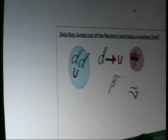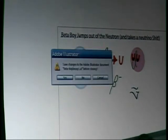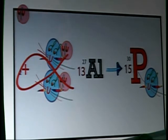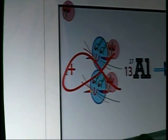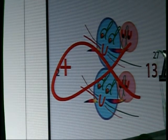Beta decay again — beta boy jumps out with the neutrino. This was the one. We're going to introduce our alpha fishy here. The alpha particle, in order for you to remember it, it's going to be alpha decay. What does an alpha particle look like? Two protons, two neutrons.